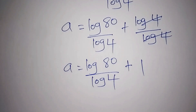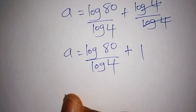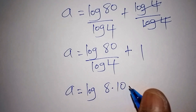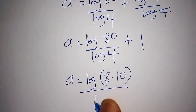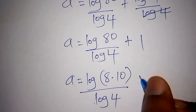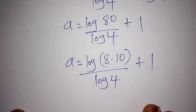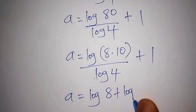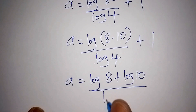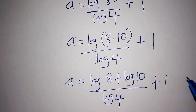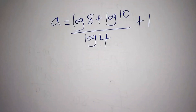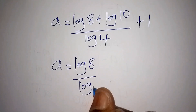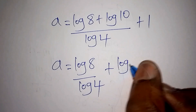So a equals log 8 all over log 4, plus 1. We can further split this: log 8 can be written using the product rule. So a equals (log 8 plus log 10) all over log 4, plus 1. Dividing through, a equals log 8 over log 4, plus log 10 over log 4, plus 1.